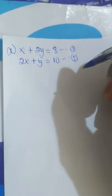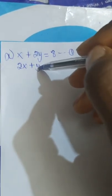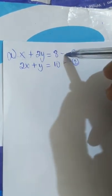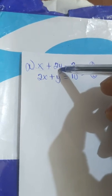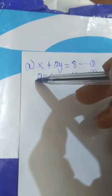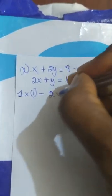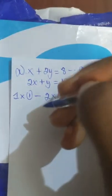Now we can try to eliminate y by taking the coefficient of one equation and multiplying throughout all the terms on equation one, and taking the coefficient of equation two and multiplying all the terms on equation two. So we can say: one times equation one minus two times equation two.